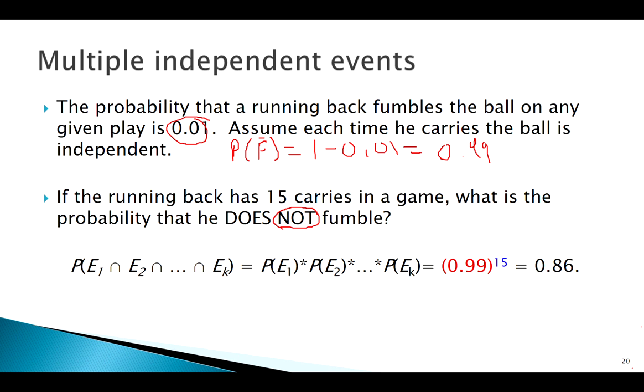I ought to be able to say okay, the probability that he doesn't fumble the first time times the probability doesn't fumble the second time and so forth. Instead of writing that out 15 times, since they all have the same probability, we can just say 0.99 to the 15th. There we go - 86% chance he doesn't fumble in the next game.